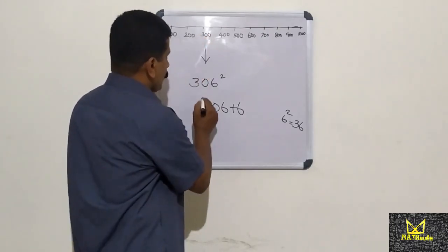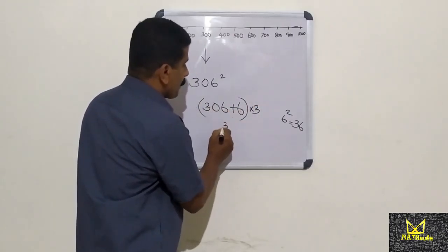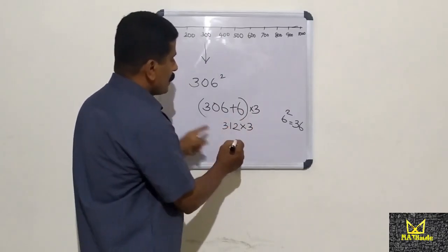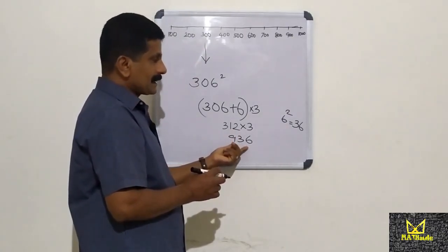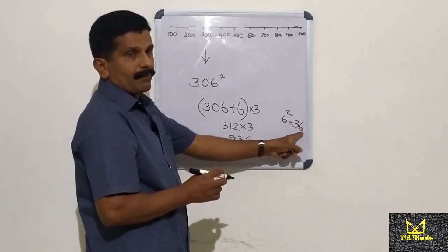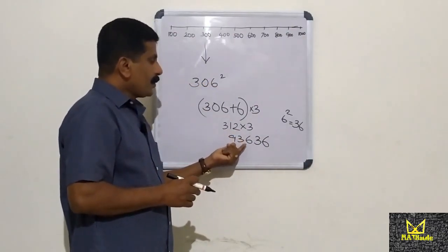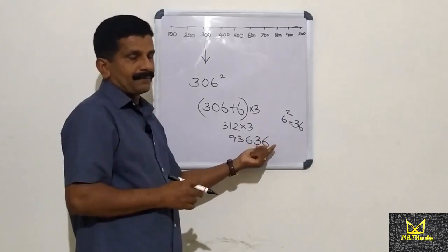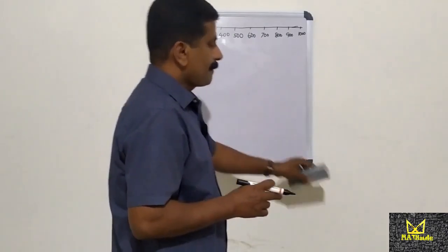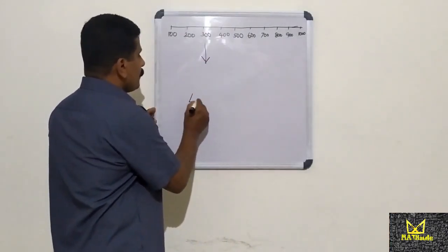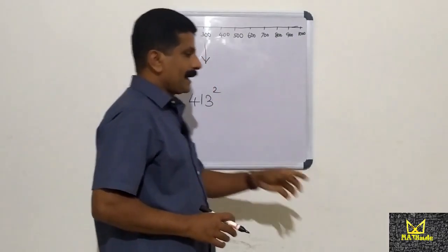If 3, we can get 3. We can get 6, we can get 3. What do we get? The answer is 36. This is 413.